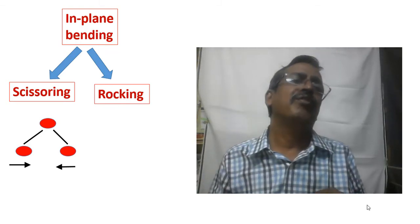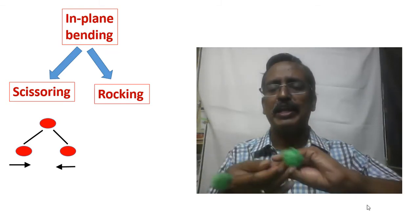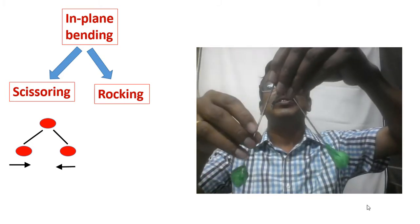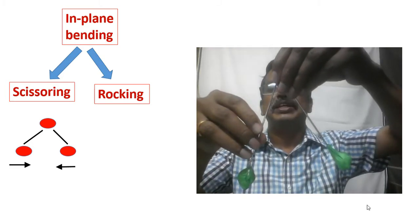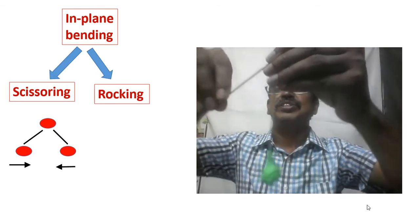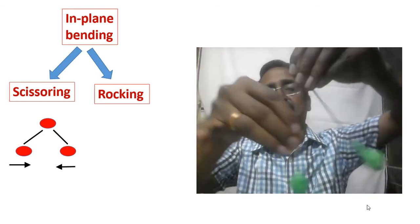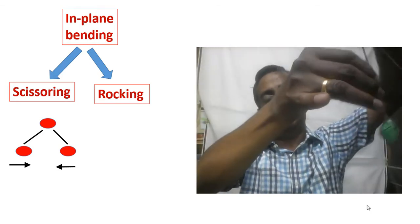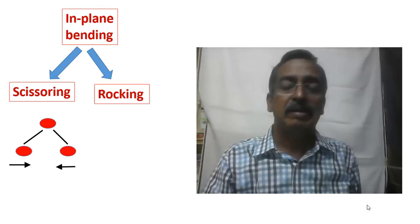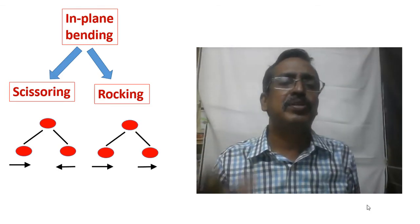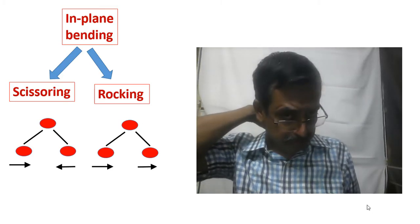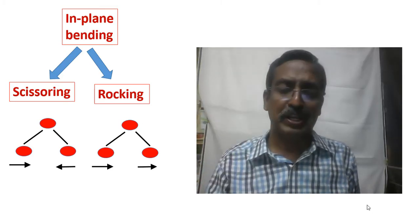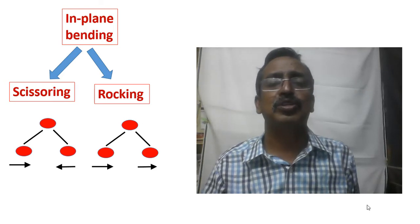The second method of in-plane bending is rocking. Here, both bonds move in the same direction. This is represented in the diagram where both arrows point in the same direction.